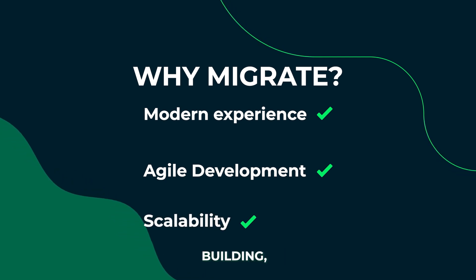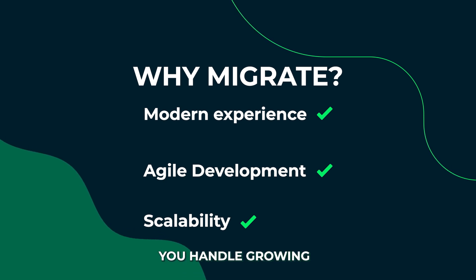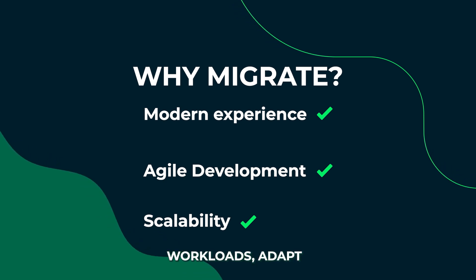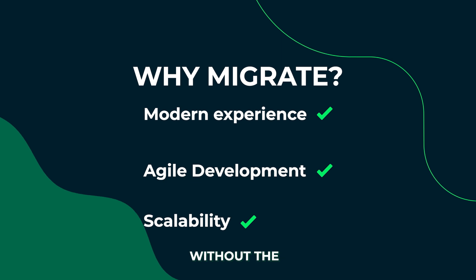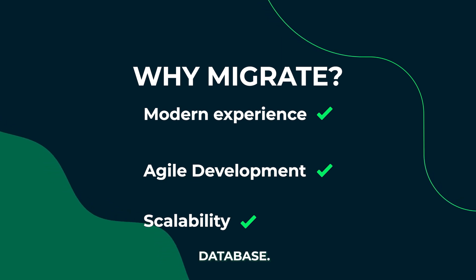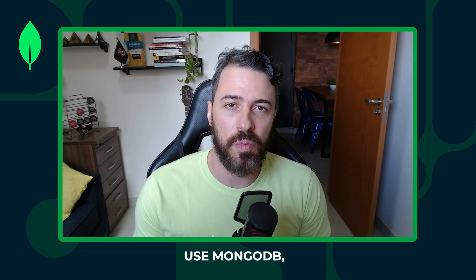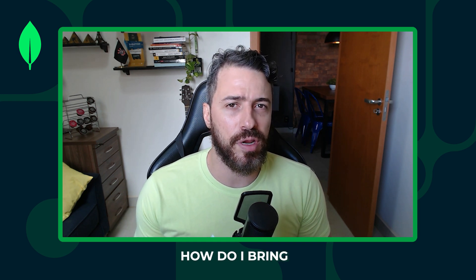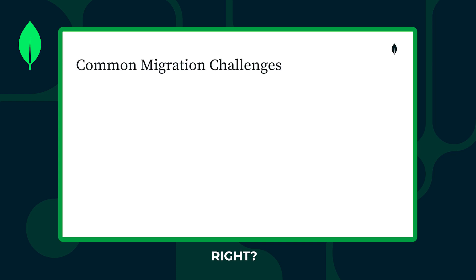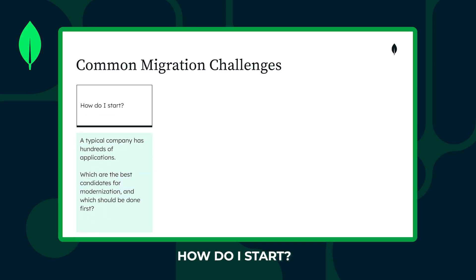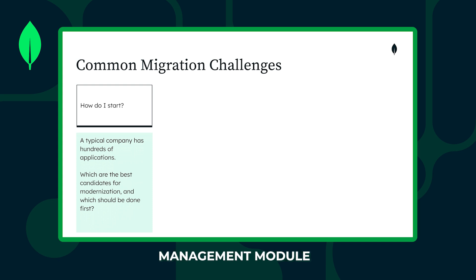With its flexible schema, built-in scalability, and high availability, MongoDB lets you handle growing workloads, adapt quickly to new requirements, and scale easily without the limitations of traditional databases. Now, you're already convinced to use MongoDB, but you're wondering: how do I bring my relational data into MongoDB? The first challenge is answering the question: how do I start? What modules should I migrate first? A typical company has hundreds of applications — think of a system with a customer management module and a sales module. Which should I migrate first?